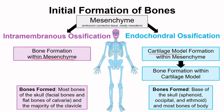In this image, anything shown in blue represents all the bones except those of the face, parts of the skull, and the clavicle — these are formed through endochondral ossification. Anything in purple is formed through intramembranous ossification.